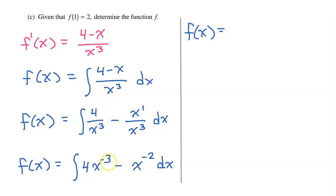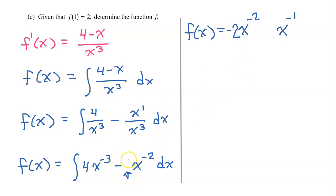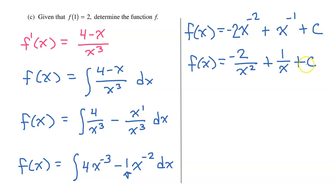Using the power rule of integration, I add one to each exponent. For four x to the negative three: the new exponent is negative two, and dividing four by negative two gives negative two, so I get negative two x to the negative two. For negative x to the negative two: the new exponent is negative one, and dividing negative one by negative one gives positive one, so I get positive x to the negative one. I'll temporarily include the constant of integration C, since we have enough information to solve for it.